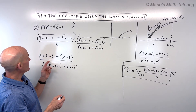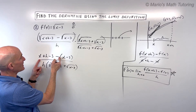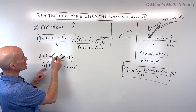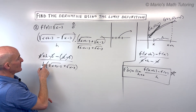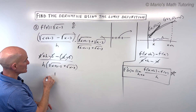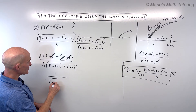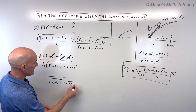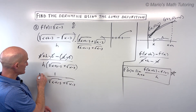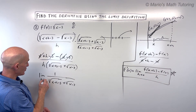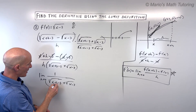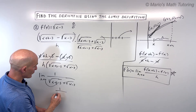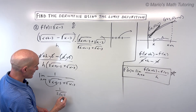Now let's do a little simplifying. x minus x cancels, negative 3 plus 3 cancels, and h divided by h cancels to 1. So we get 1 over the square root of x plus h minus 3, plus the square root of x minus 3. But remember, this is the limit as h approaches 0. Now I can put 0 in for h, which gives us square root of x minus 3 plus square root of x minus 3, which is 1 over 2 times the square root of x minus 3. That's our f prime of x — our derivative.